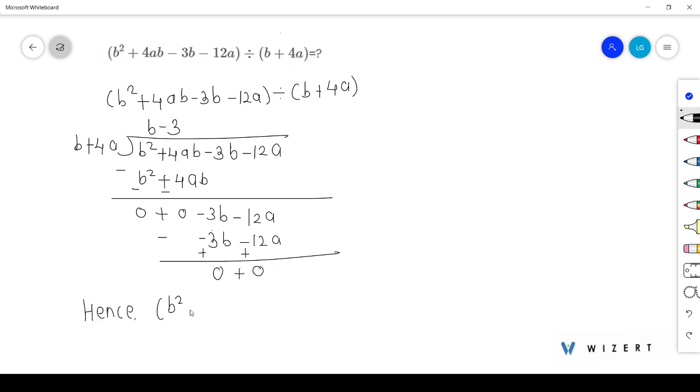So the result of our polynomial division is our quotient here, which is b - 3.